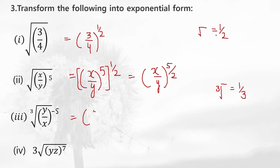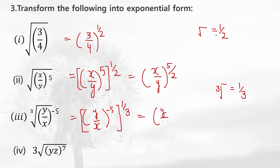Now converting the next one: you write the number as it is — y by x to the power minus 5. The cube root converts to 1 by 3. Multiplying these powers: y by x with minus 5 multiplied by 1 over 3 gives the exponent minus 5 by 3.